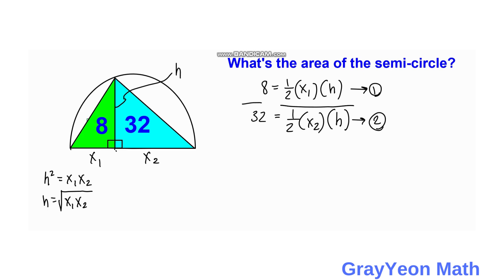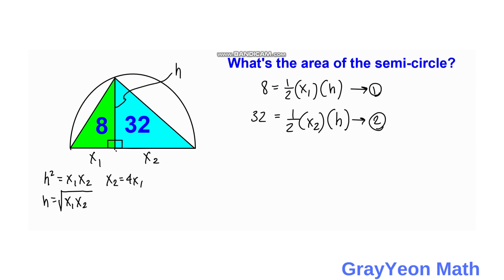We divide the two equations. The one-halves cancel out, giving us 4. Cross-multiplying, we get x2 equals 4 times x1, or x2 = 4x1.